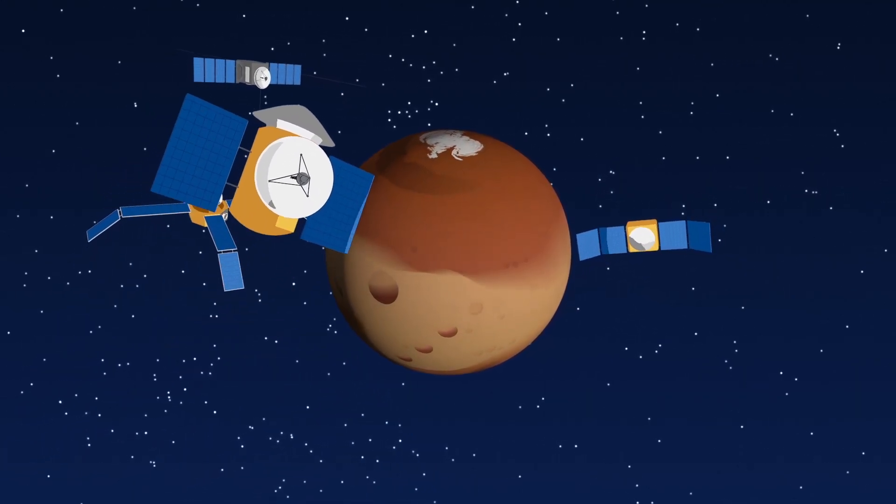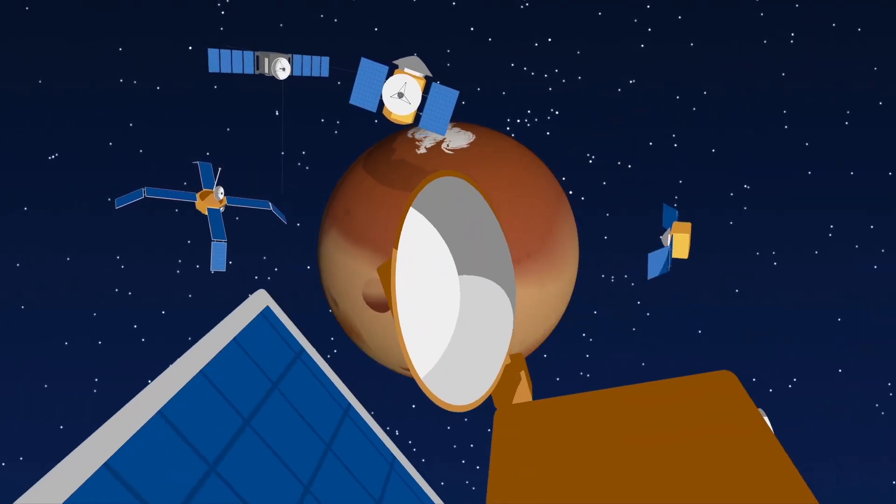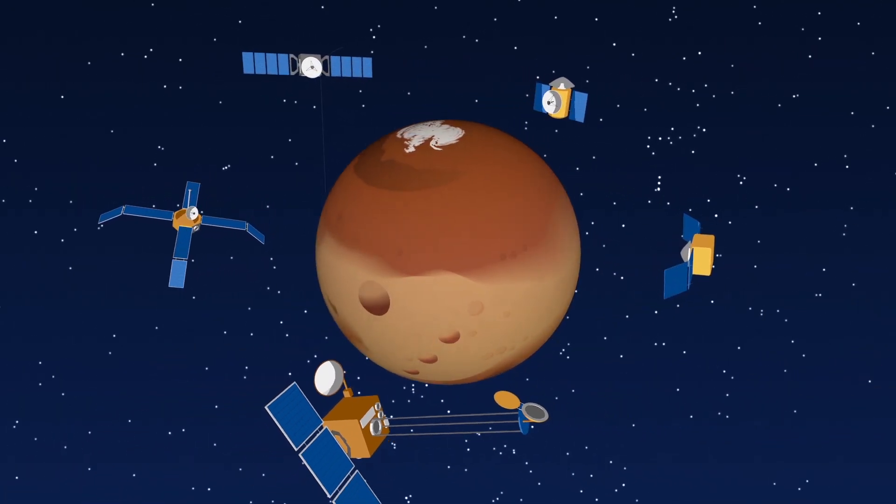Some are in orbit, like Mars Express, and some have landed on the surface, like a NASA rover called Curiosity. They've revealed a lot of Mars' secrets.